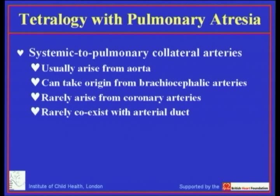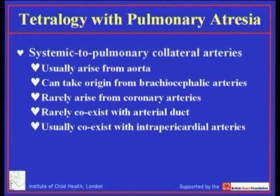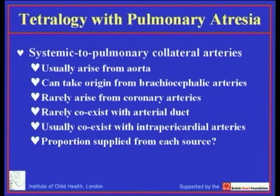The significance of these collateral arteries is that they hardly ever coexist in the same lung with an arterial duct. Only three or four cases in the world literature provide convincing evidence of an arterial duct coexisting with collateral arteries, making them sufficiently rare that a working hypothesis holds: if you find an arterial duct, there will not be collateral arteries in the same lung. Contrarily, if you find collateral arteries supplying one lung, there will not be an arterial duct, but there will usually be additional intrapericardial arteries. The key is to determine how much of the lung is supplied specifically by systemic to pulmonary collateral arteries versus how much is supplied by anastomoses with intrapericardial arteries.